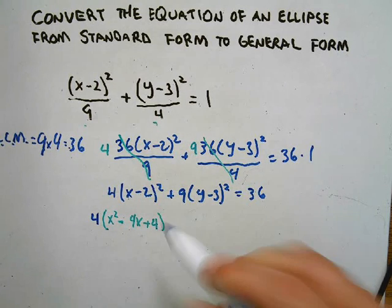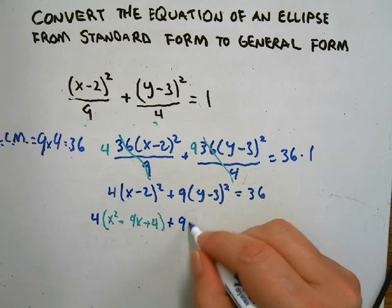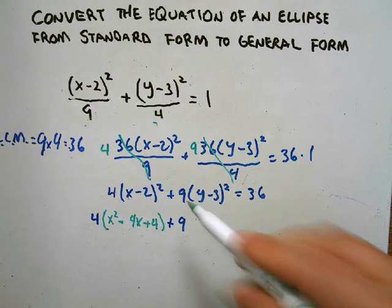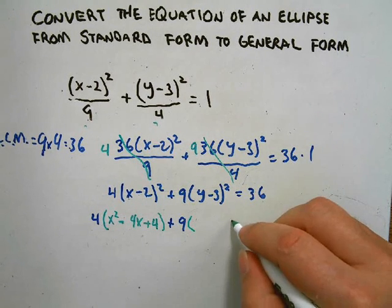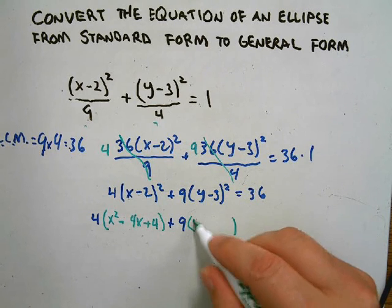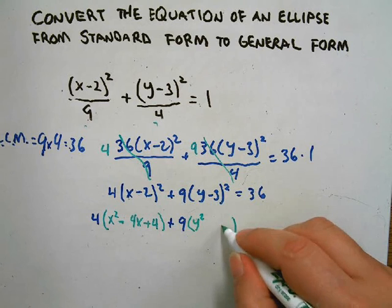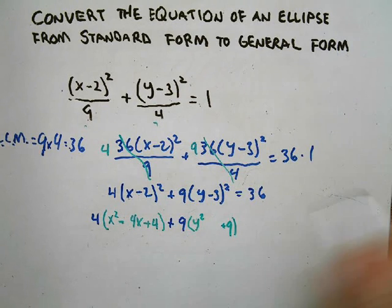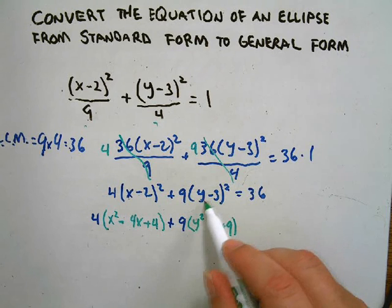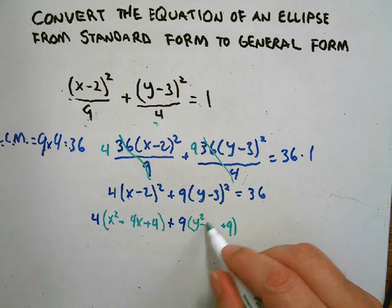Same thing over here. We want to repeat that process. Again, we're squaring this, so the first term would be y², the last term would be a positive nine, and twice the product in the middle. So it's -3y is the product, and twice that is -6y.